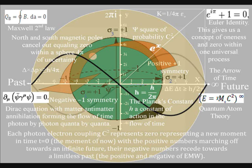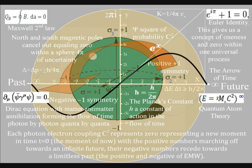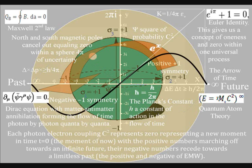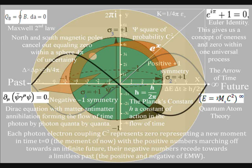This moment of now is formed by light interacting with matter, with the positive numbers marching off forming a potential future with a square of probability, and the negative numbers receding towards a limitless past, representing the positive and negative of electromagnetic waves.